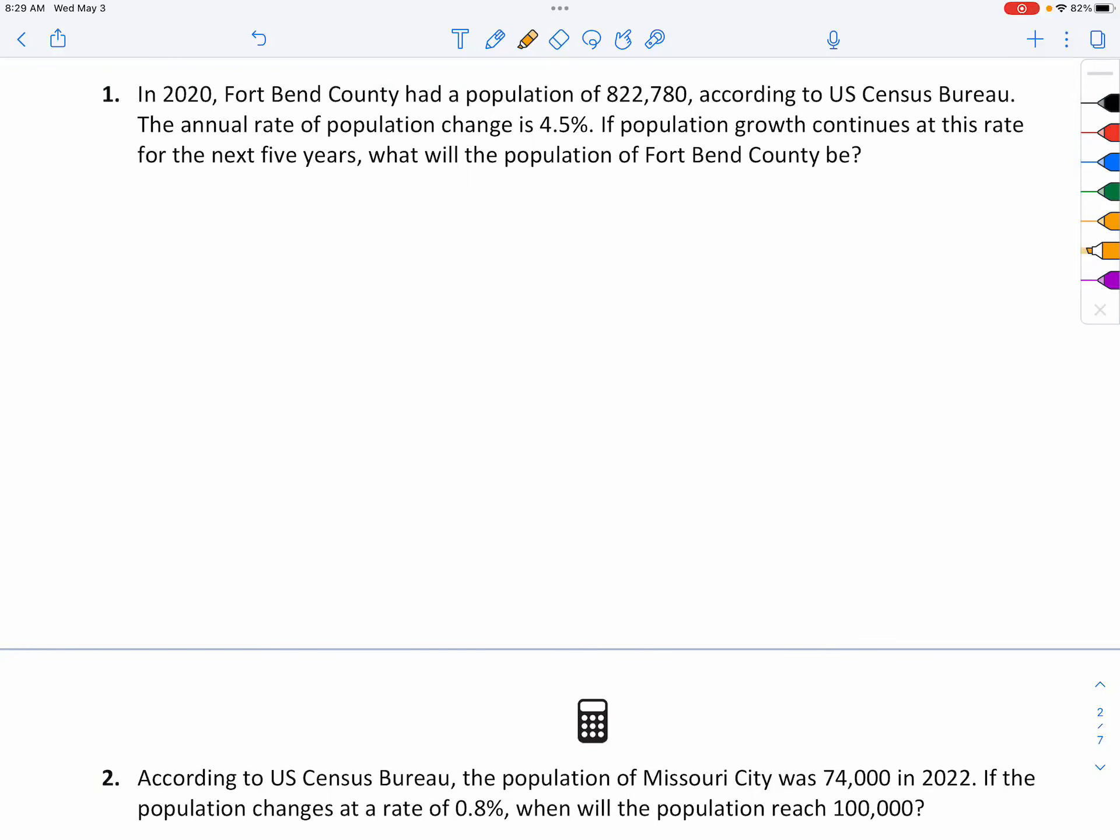So for number one, we have in 2020, Fort Bend County had a population of 822,780. According to U.S. Census Bureau, the annual rate of population change is 4.5%. If population growth continues at this rate for the next five years, what will the population of Fort Bend County be? So here,